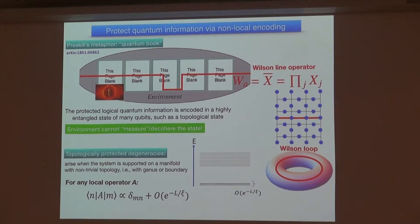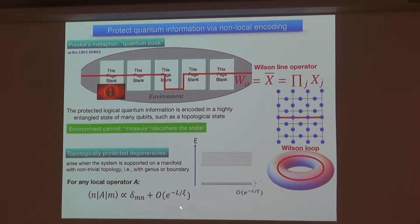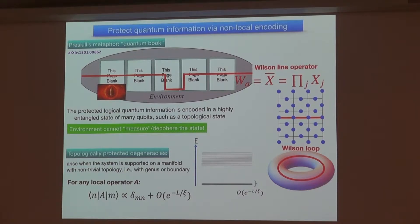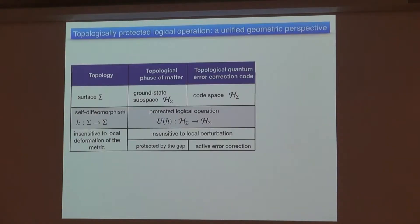Local interaction cannot couple the states in your topological subspace and hence cause logical error, because the logical error can only be caused by a non-local operator such as this Wilson line operator. Now we have a topological quantum memory. The next question is how to manipulate the quantum information, which is stored in a very complicated, non-local way. It turns out there's a unified geometrical picture for all these cases.